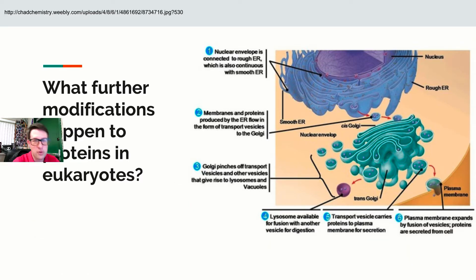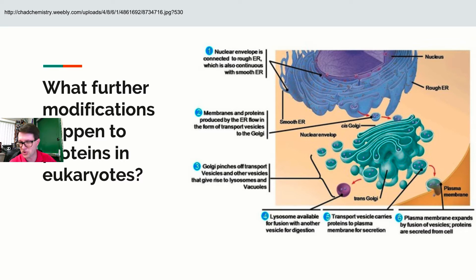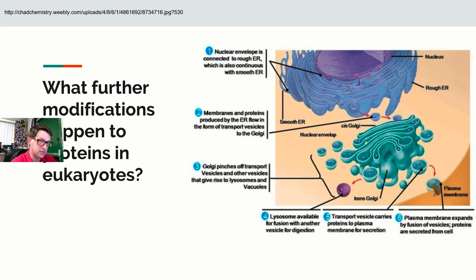For prokaryotes, once transcription and translation are done, that's it. But eukaryotes still modify their proteins: adding sugars, chopping parts off, rearranging pieces. That's the job of the Golgi apparatus. Proteins are made inside the endoplasmic reticulum, shipped to the Golgi for modification, and from there sent off to wherever they're needed.